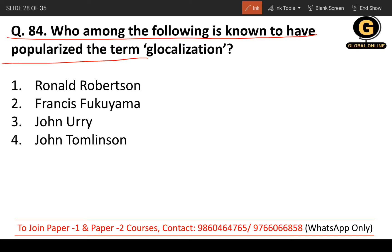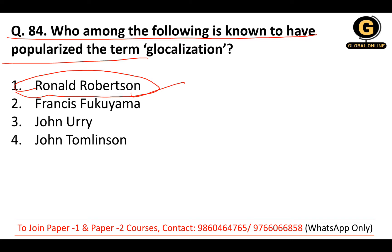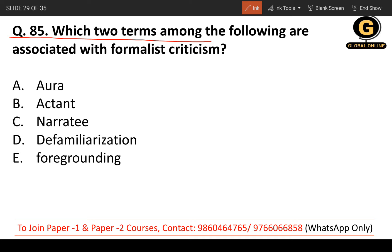Question 84: Who is known to have popularized the term 'glocalization'? Glocalization is a combination of two words — globalization and localization — and refers to both global and local dimensions. The person who popularized the term was Roland Robertson. Ronald Robertson is the correct answer.